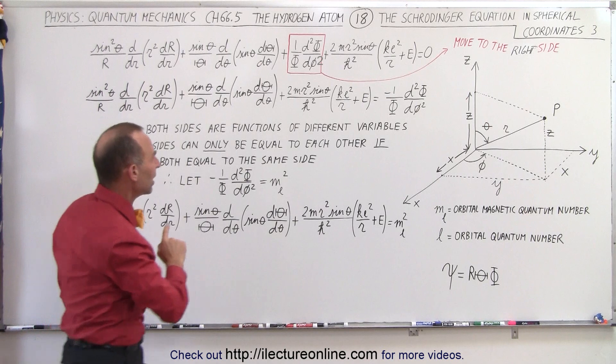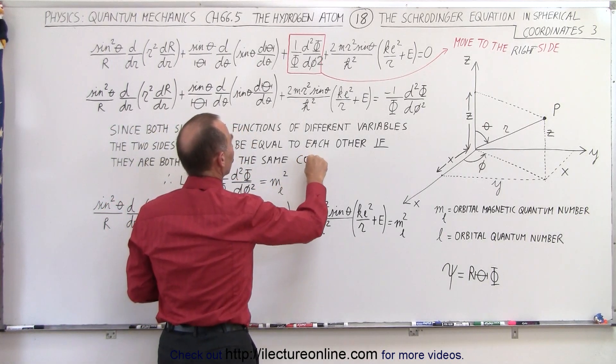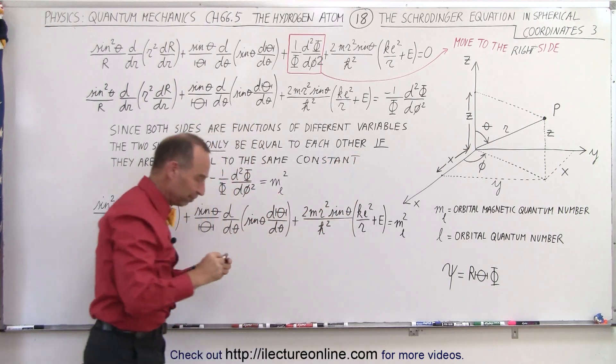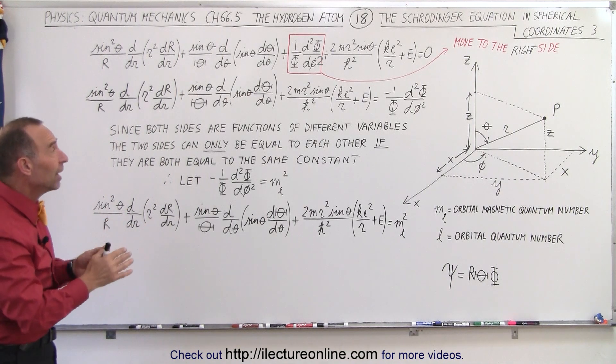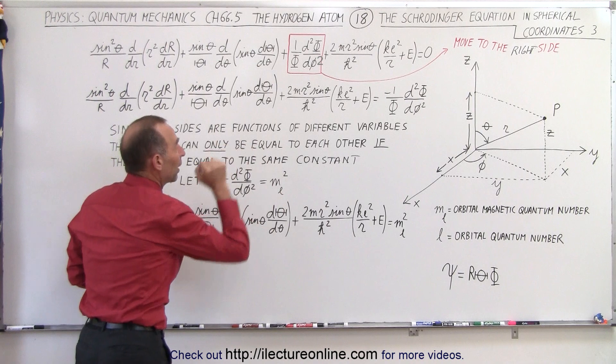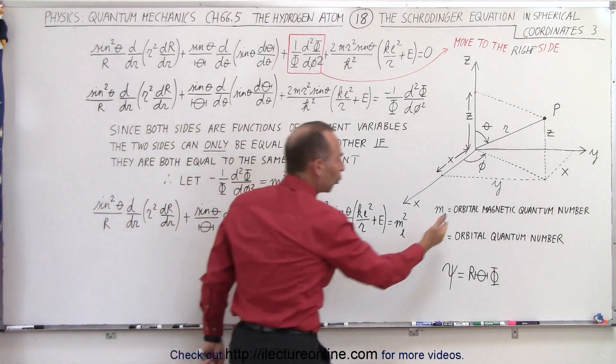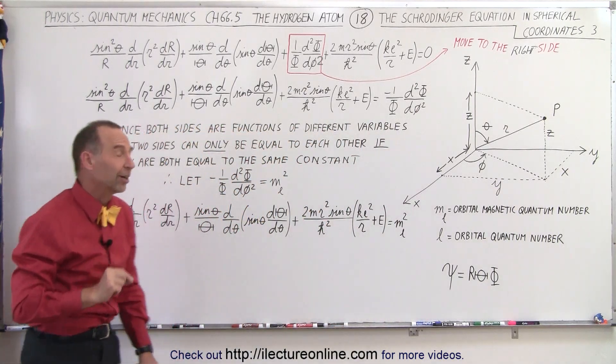So let's change that to constant. They can only equal the same constant. And what we're going to do then is we're going to take the right side and set it equal to M sub L squared. Now what is M sub L? Well, M sub L is what we call the orbital magnetic quantum number. So we've very carefully chosen that constant.